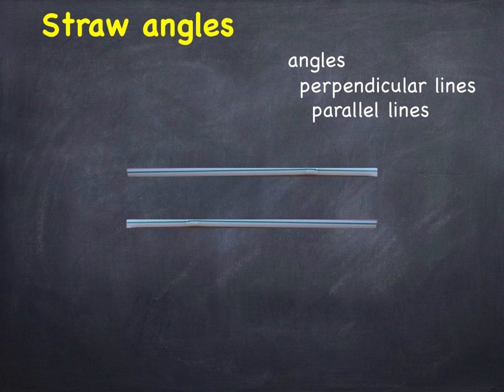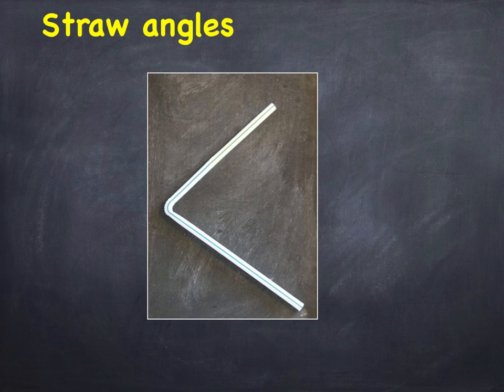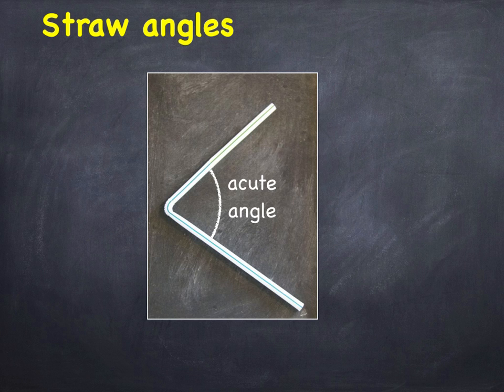Take a couple of straws and push one into the other. The bend lets you create different angles. And here's a small one. This is an acute angle.